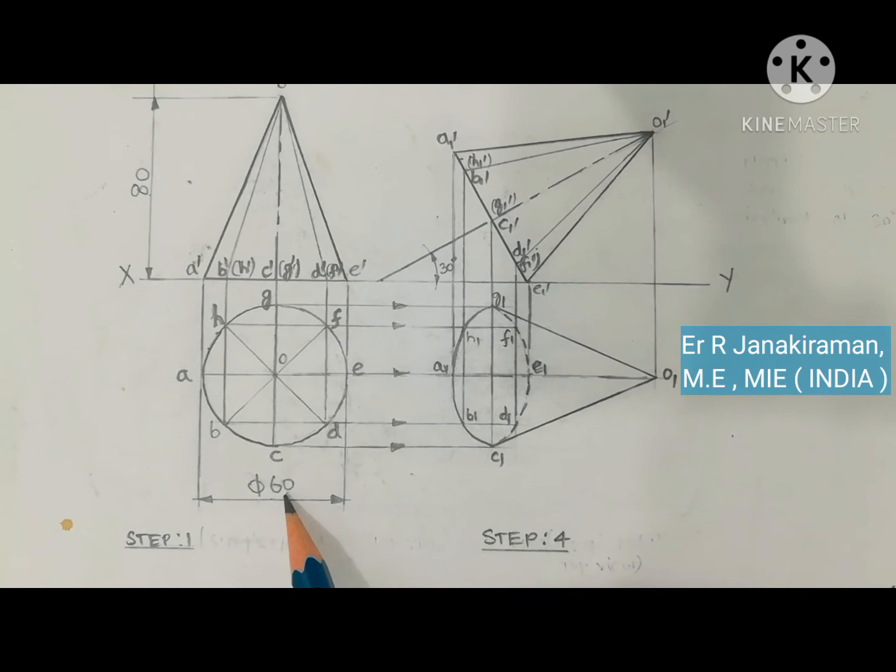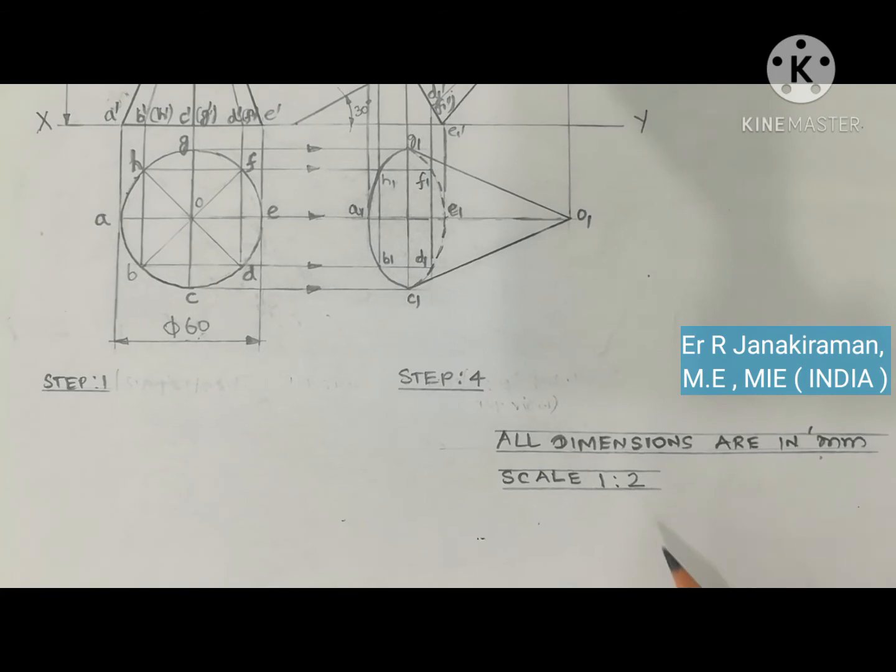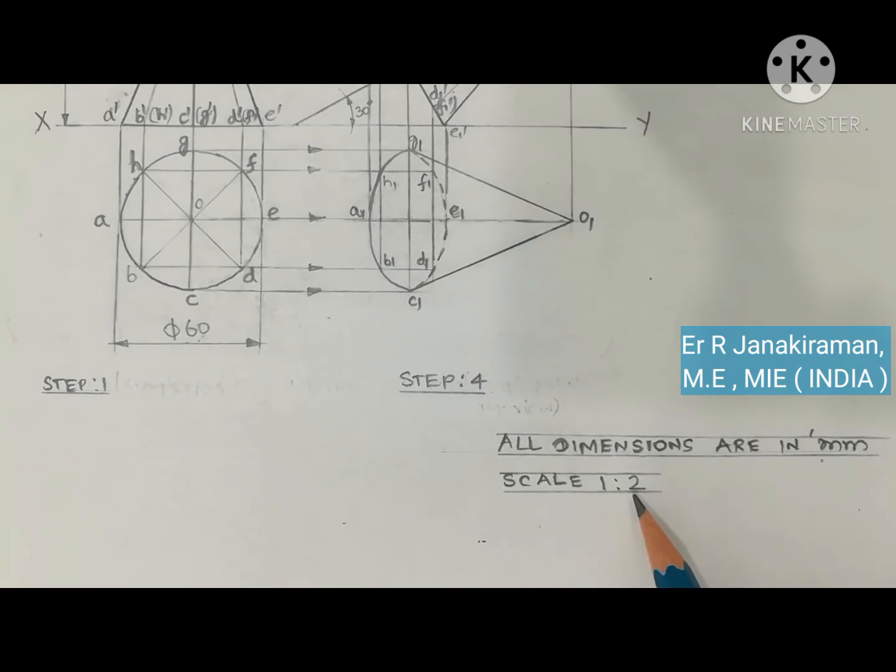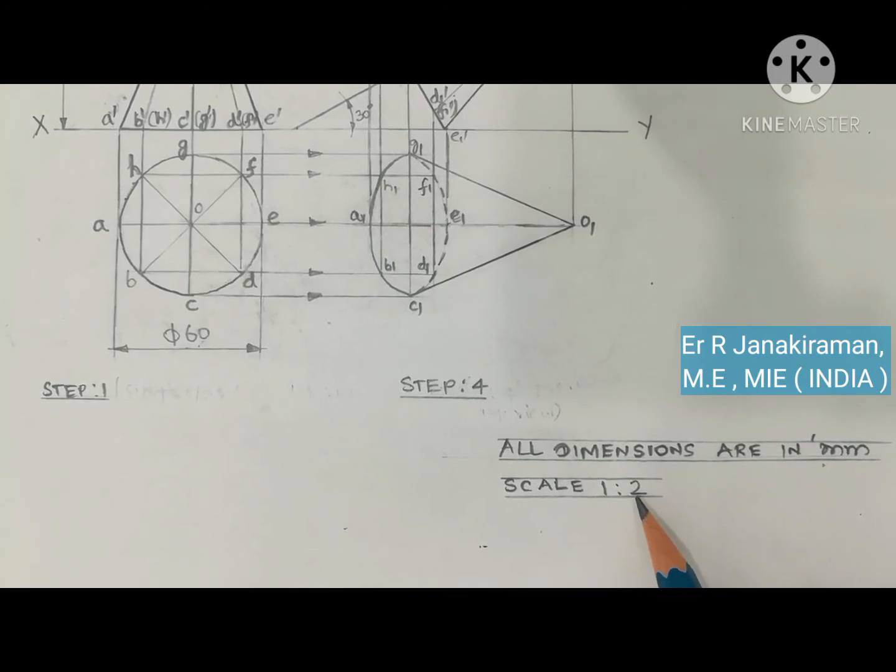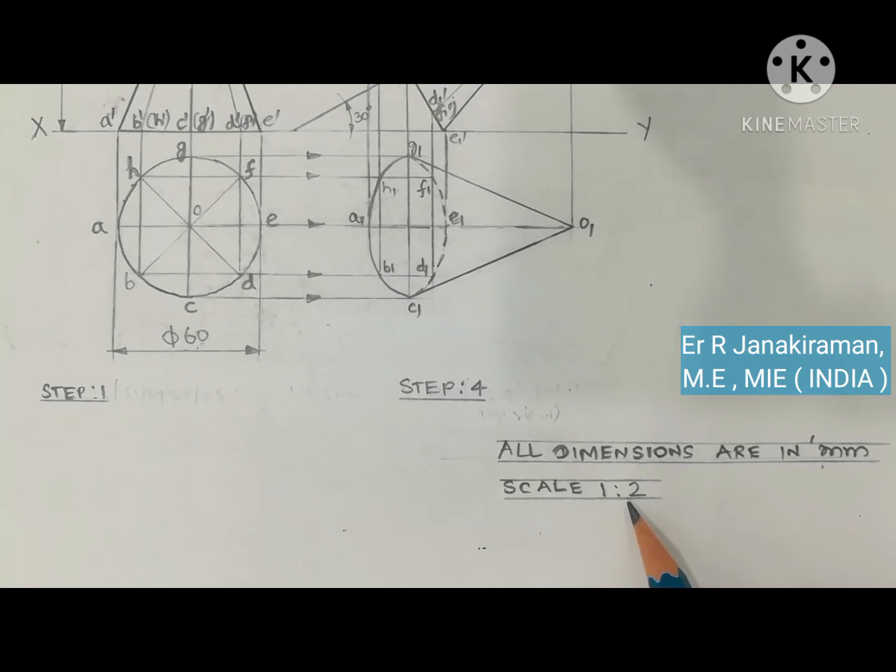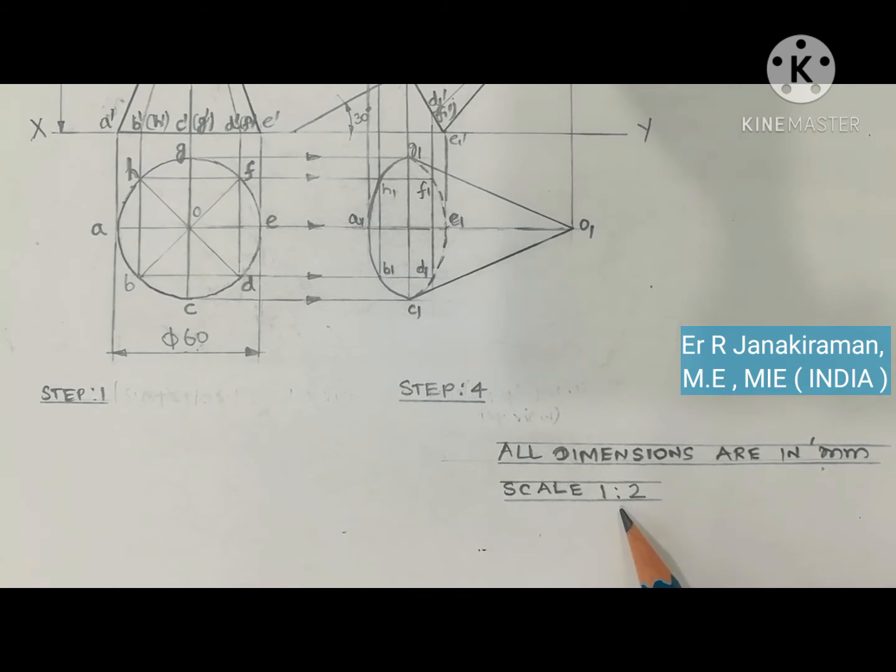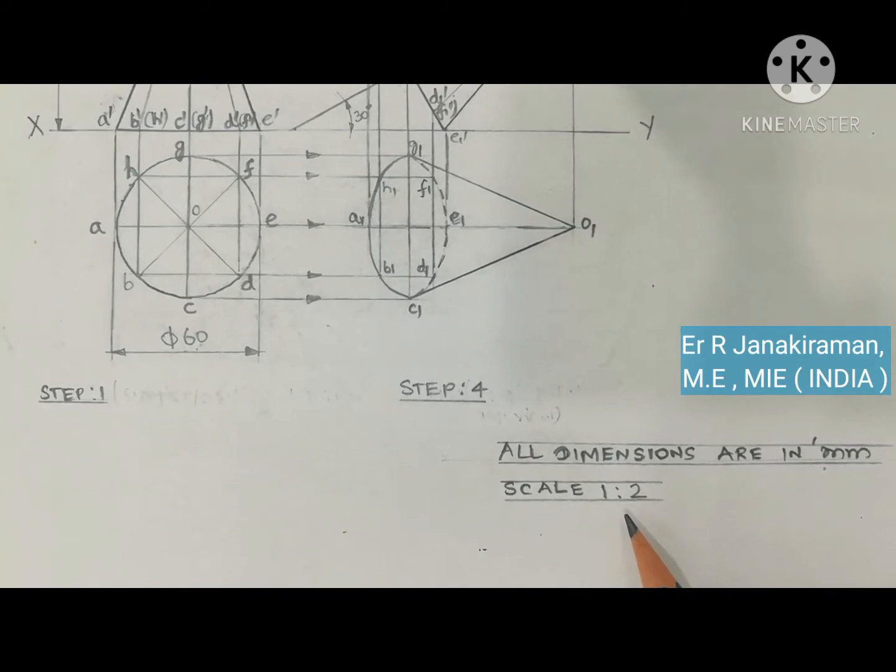Because I followed the reduced scale, scale followed is 1 is to 2. This is half time reduced. So when you set the full scale, you have to write it as 1 is to 1. Then it is reduced scale followed, half of the size. The diagram is half, so it follows the reduced scale. It is called reduced scale, written as 1 is to 2.